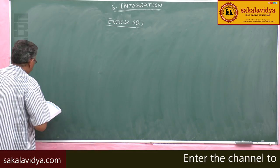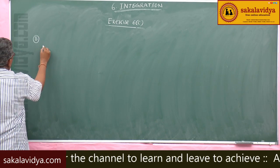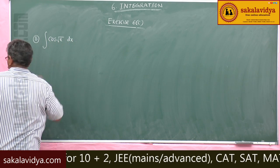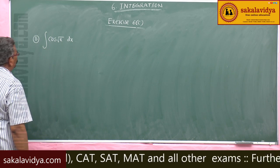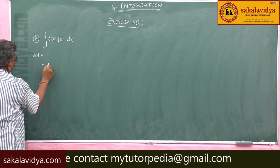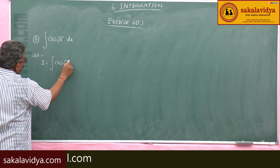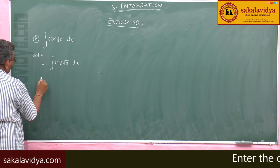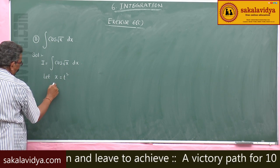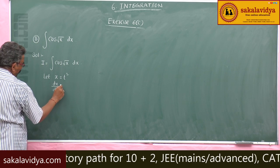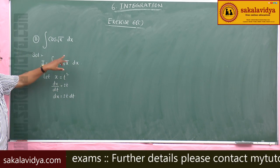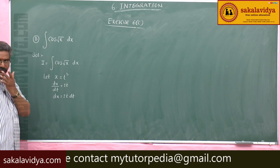Problem 8: integral of cos(√x) dx. Let I equal to integral of cos(√x) dx. Let x = t², so dx/dt = 2t, dx = 2t dt. Therefore √x = t and dx = 2t dt.